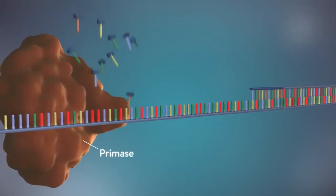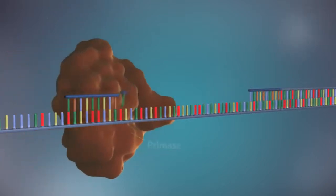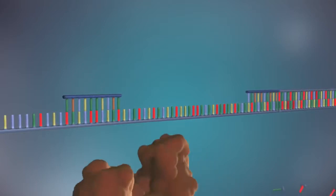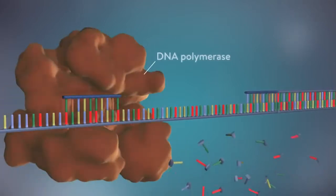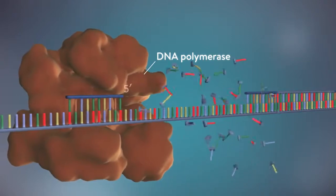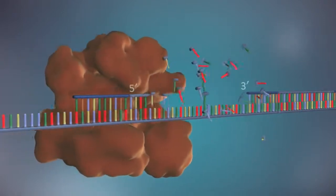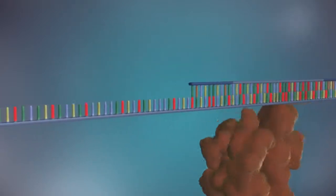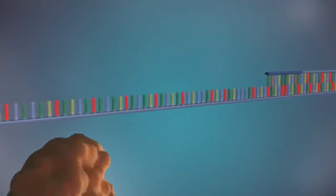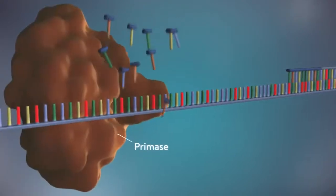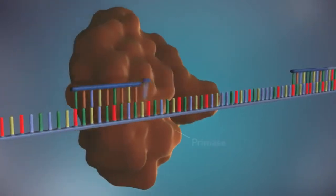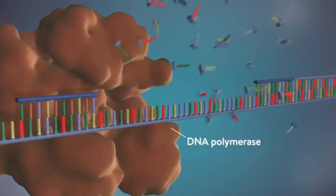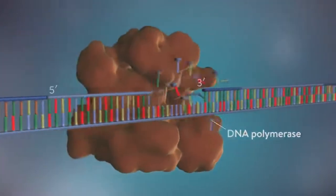Each fragment is started with an RNA primer. DNA polymerase then adds a short row of DNA bases in the five prime to three prime direction. The next primer is then added further down the lagging strand. Another Okazaki fragment is then made and the process is repeated again.